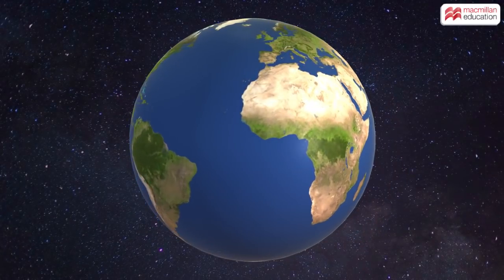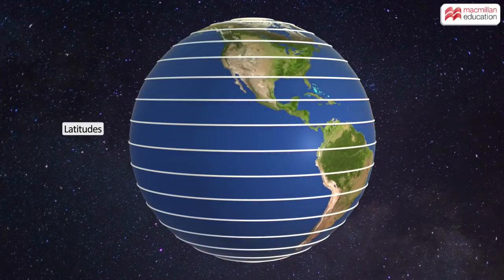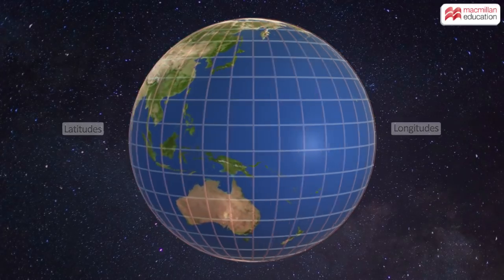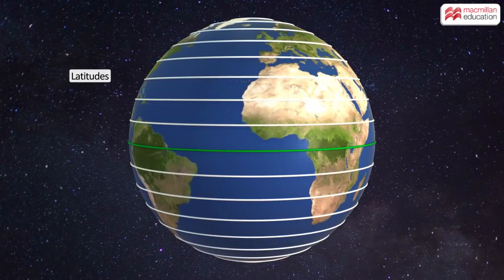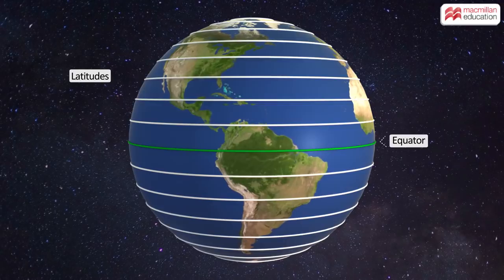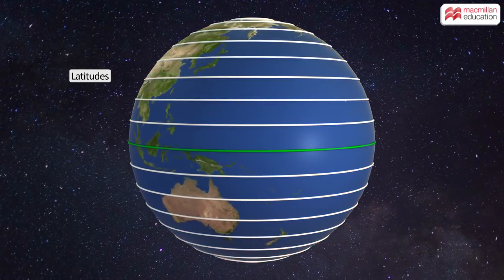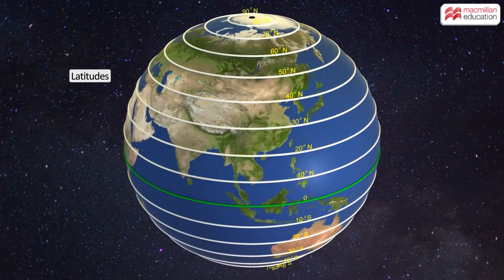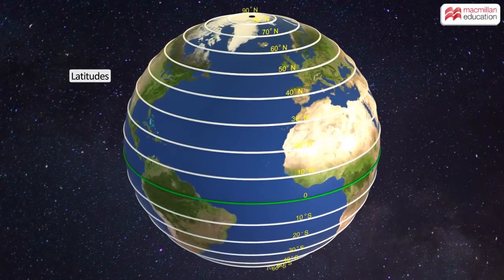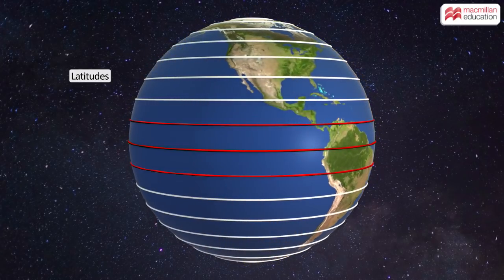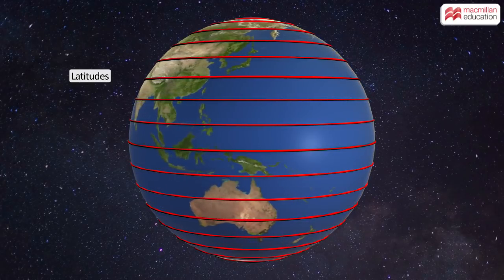The geographic coordinates of a place consist of the degrees of latitude and longitude. Latitudes, or parallels, are imaginary lines drawn parallel to the equator towards both the north and south directions. They are measured from 0 degrees to 90 degrees in both hemispheres. The earth is round, so the length of the latitudes decreases as we move towards the poles.